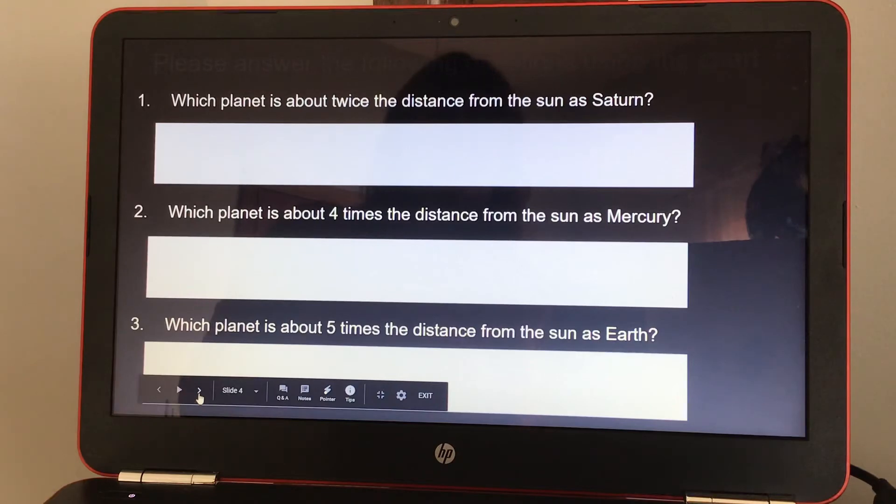I'm going to have you answer these questions. Please answer the following questions using the chart. Number one, which planet is about twice the distance from the Sun as Saturn?